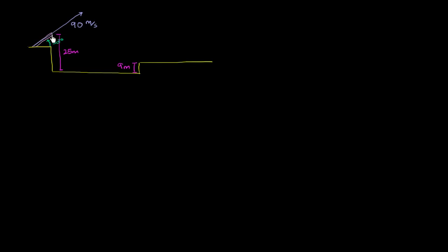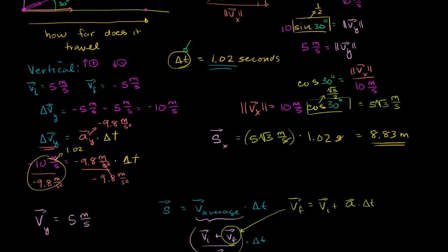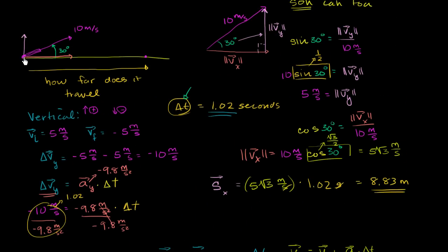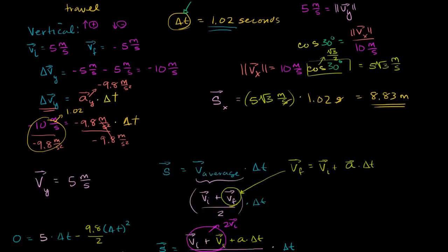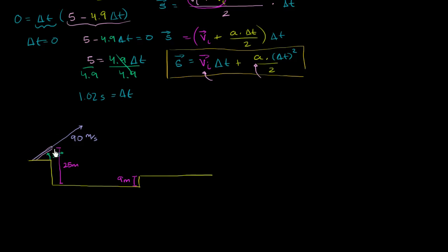We're essentially launching this from a height of 25 meters. In the last video, even though I drew the cannon like this, we assumed it was being launched from an altitude of zero and landing back at an altitude of zero. Here, we're launching from an altitude of 25 meters — that's when it's leaving the muzzle — and it's going to start decelerating in the vertical direction as soon as it leaves. It's not going to land back at the same altitude.